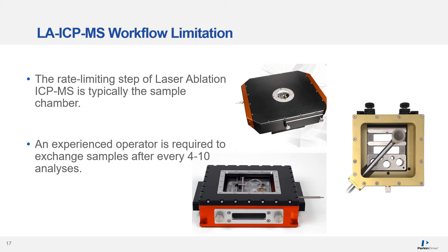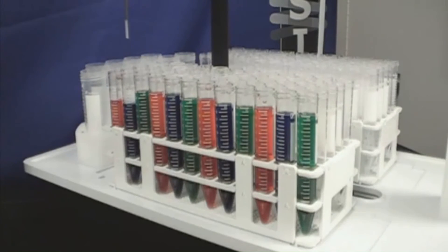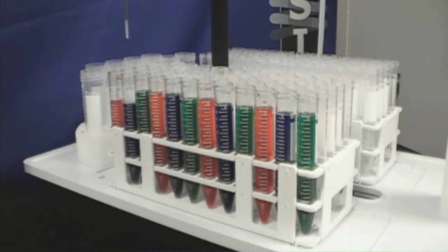Looking at the current drawbacks in automation of laser ICP-MS, the rate-limiting step was previously the sample chamber. Sample chambers used in laser ablation ICP-MS can usually fit about 5 samples, maybe 10, and an experienced operator was required to exchange samples every 4 to 10 analyses. However, we will discuss new technology and how we can automate this. We all have experience with automation for liquid ICP-MS analysis, and this is the standard we expect when we mention automation.